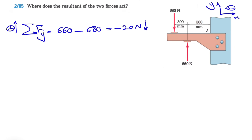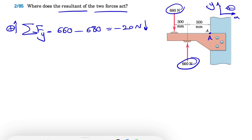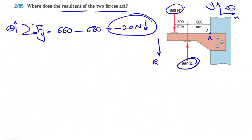When the question asks where does the resultant of these two forces act, it means that if I want to replace these two with one single force, where should that be? In order to figure out the distance that this one single force — the resultant R — is acting, we basically have this force R and we have to figure out this distance D.